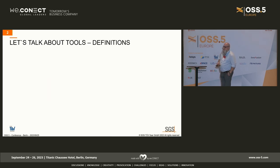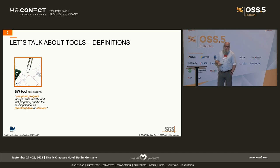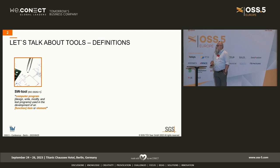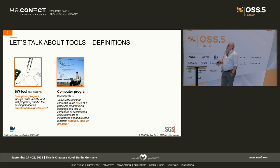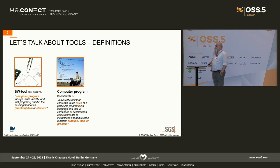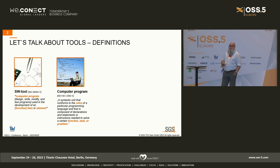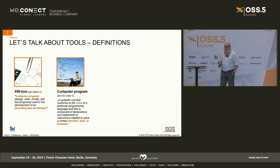Let's talk about some definitions. First, what is a software tool? ISO 26262 Part 1 says a software tool is a computer program which could be a design, write, modify, and test program used in the development of an item or element, or of course a function. There is a standard which has been withdrawn, but the definition of the computer program is still valid — it's the ISO IEC 23821. It says a computer program is a syntactic unit that conforms to the rules of a particular programming language and that is composed of declarations and statements or instructions needed to solve a certain function, task, or even a problem.